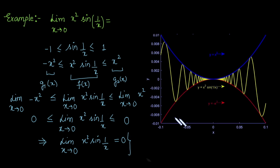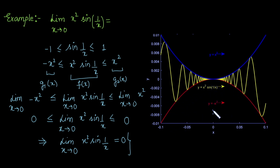Here we have the graph of these three functions. The yellow curve represents x² sin(1/x), the blue curve represents x², and the red curve represents -x². As you can observe, as x tends to 0, the limit of all three functions equals 0, and the function x² sin(1/x) is squeezed between -x² and x². This is how the squeeze theorem is applicable in a one-variable case.